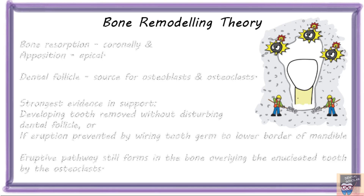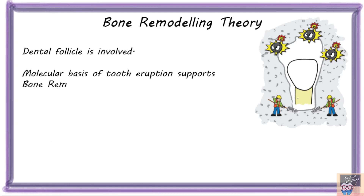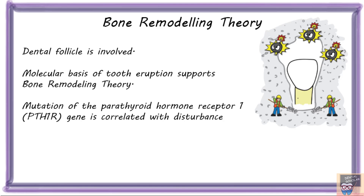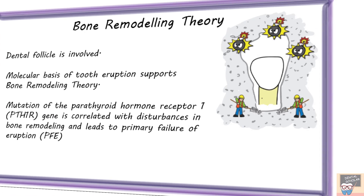The dental follicle is also involved in bone remodeling. The molecular basis of tooth eruption supports the bone remodeling theory. For example, whenever there is a mutation of the parathyroid hormone receptor 1 gene, it is correlated with disturbance in bone remodeling and leads to primary failure of eruption. Thus bone remodeling has a role in tooth eruption.